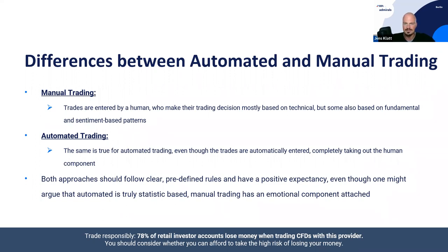When we talk about automated trading, we have pattern recognition, but trades are automatically entered — completely taking out the human component. For example, in recent webinars we looked at FX Euro/JPY on an intraday basis, or the DAX, S&P 500, or gold. With clear parameters given, you could easily enter them into an algorithm and automate the whole process of entering the trade.